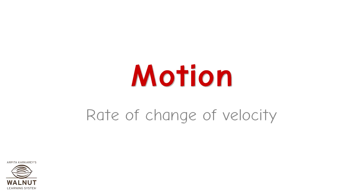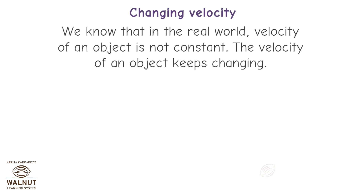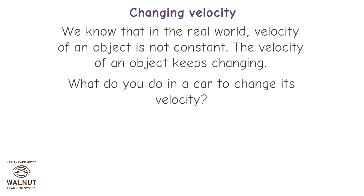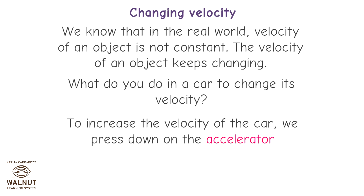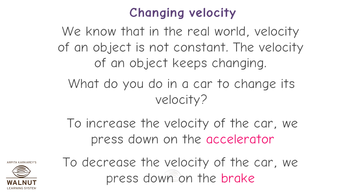Motion: Rate of Change of Velocity. We know that in the real world, the velocity of an object is not constant — it keeps changing. What do you do in a car to change its velocity? To increase the velocity of the car, we press down on the accelerator. To decrease the velocity of the car, we press down on the brake.